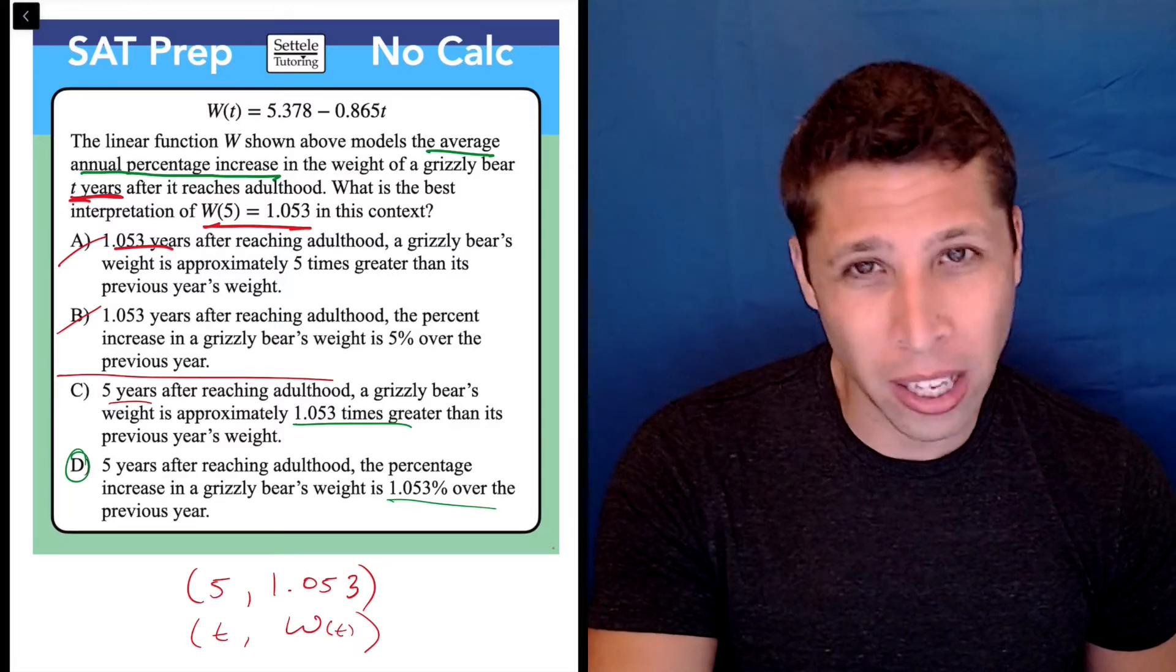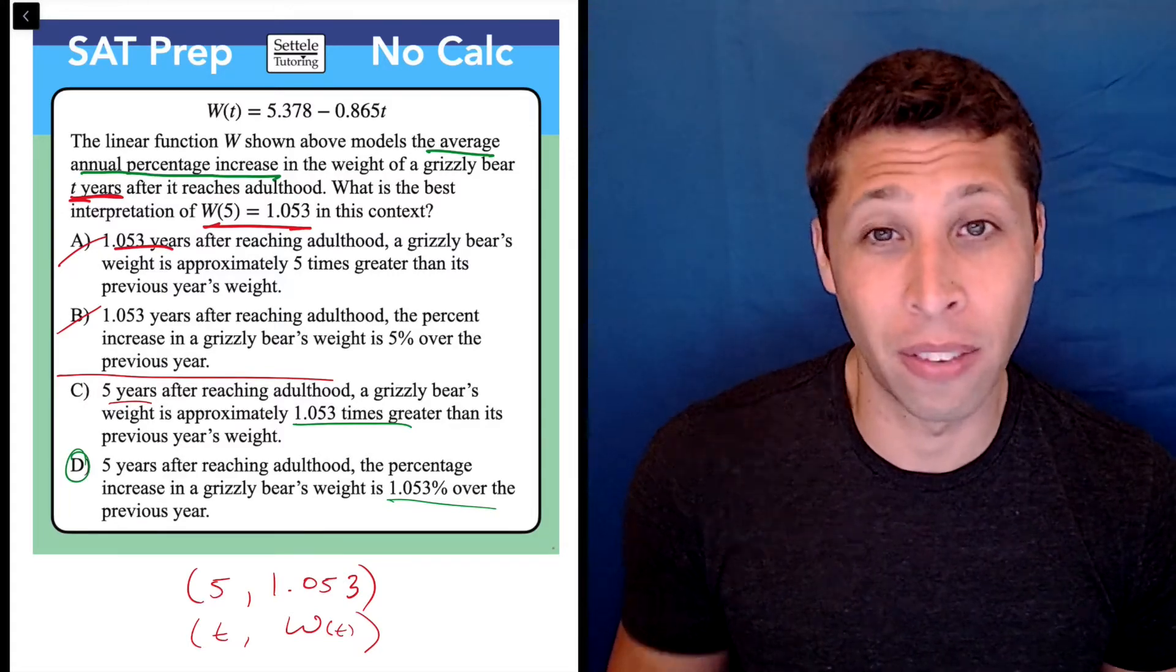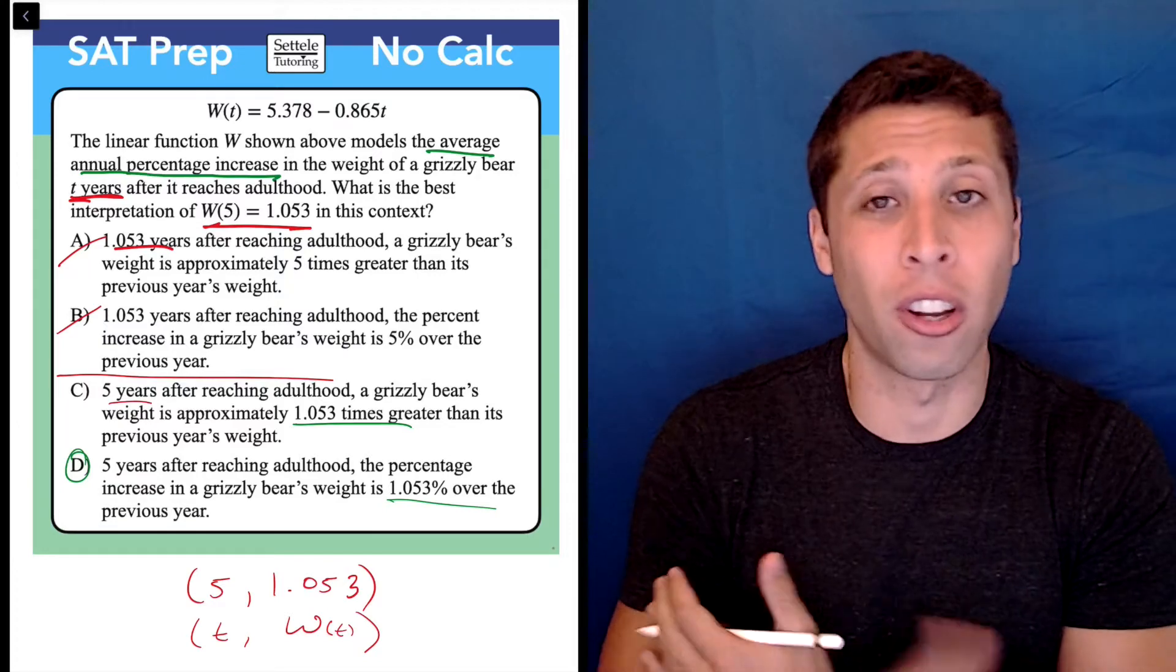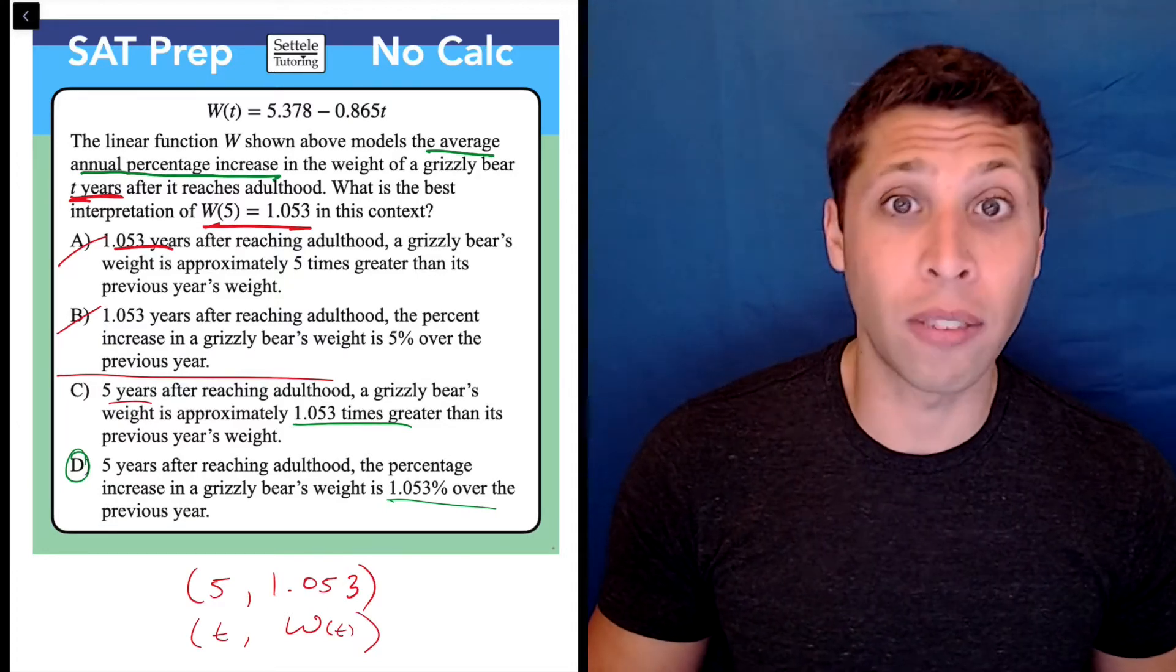Why are we talking about percentages if it's going to be something like choice C where that's not mentioned at all? So this is a very difficult question at first glance. It looks like there's a lot of reading.